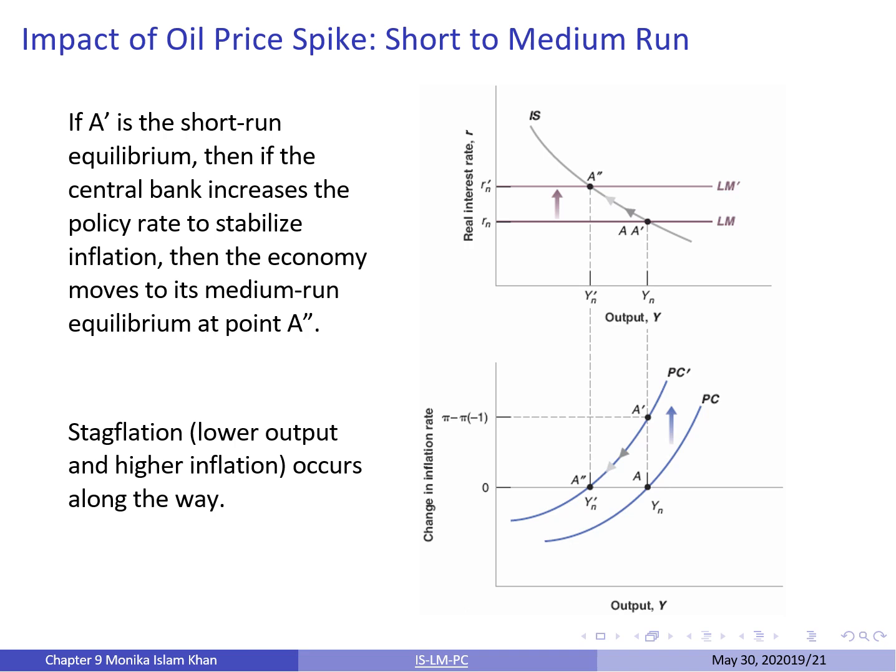Now at point A prime — the short run equilibrium — the inflation rate is increasing as shown by the bottom graph. If the central bank increases the policy rate to stabilize inflation, the LM curve shifts upward from LM to LM prime, and the economy moves to its new medium run equilibrium at point A double prime. At this point, output is lower and the change in inflation rate is zero, but the inflation rate itself is higher than before. This leads to stagflation — lower output, higher unemployment, and higher inflation.